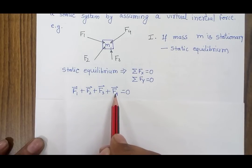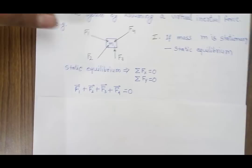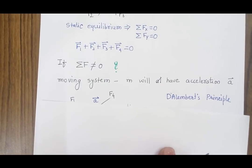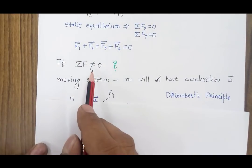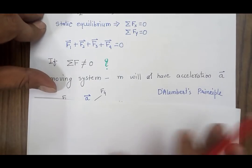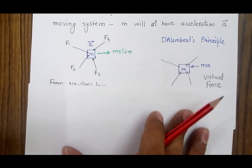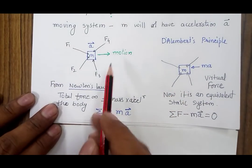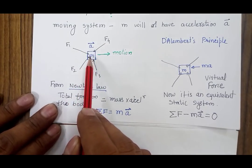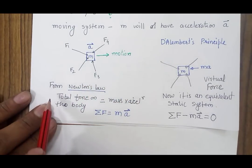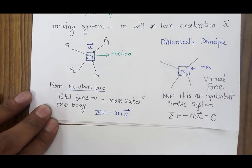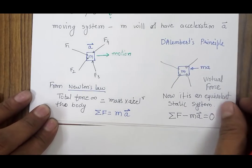Now let's consider the second case where because of all four forces the system is moving — the summation of all forces is not zero. If the forces do not balance each other, there will be a resultant force on the system which will move the system with certain acceleration. From Newton's law, all the forces will be equal to mass into acceleration.